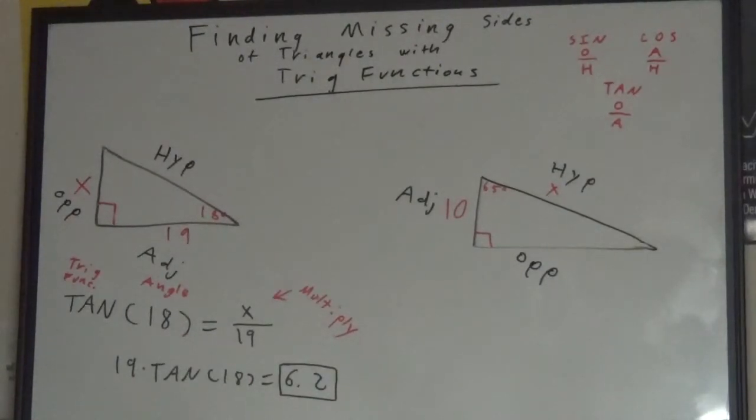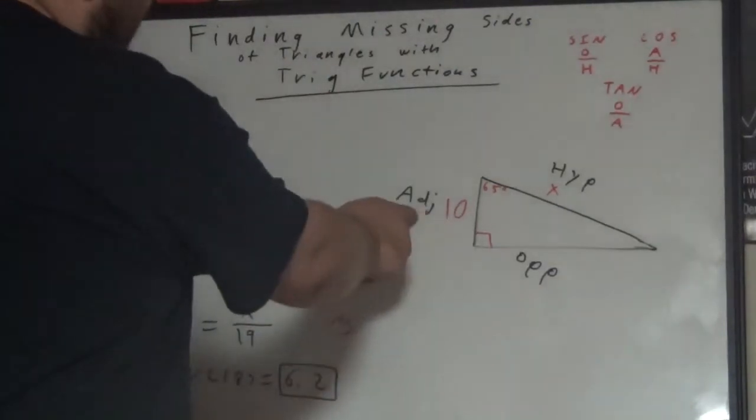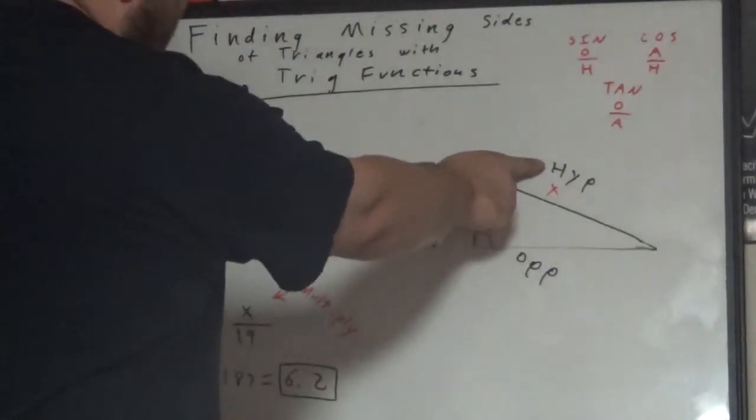Now, we select the correct, now that the triangle is labeled, we select our trig function. We have the values for adjacent and for hypotenuse.